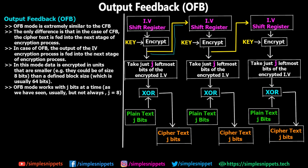In OFB, the output of the IV encryption process is fed into the next stage. When the IV is encrypted, that encrypted result is fed back as the next IV. The j bits from the first IV are shifted to the rightmost side of the original IV. Also, data is encrypted in units smaller than the defined block size — so if the block size is 64 bits, the actual encryption happens in smaller chunks like 8, 16, or 24 bits. OFB works with j bits at a time, just as in CFB mode.